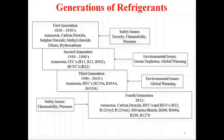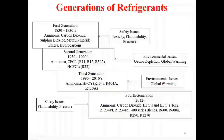The second generation is between 1930 to 1990. The refrigerants used in this generation are ammonia, CFC (chlorofluorocarbons), and HCFC (hydrochlorofluorocarbons). CFC and HCFC were introduced in this generation. The main problem with these refrigerants is that they are responsible for ozone layer depletion and global warming.